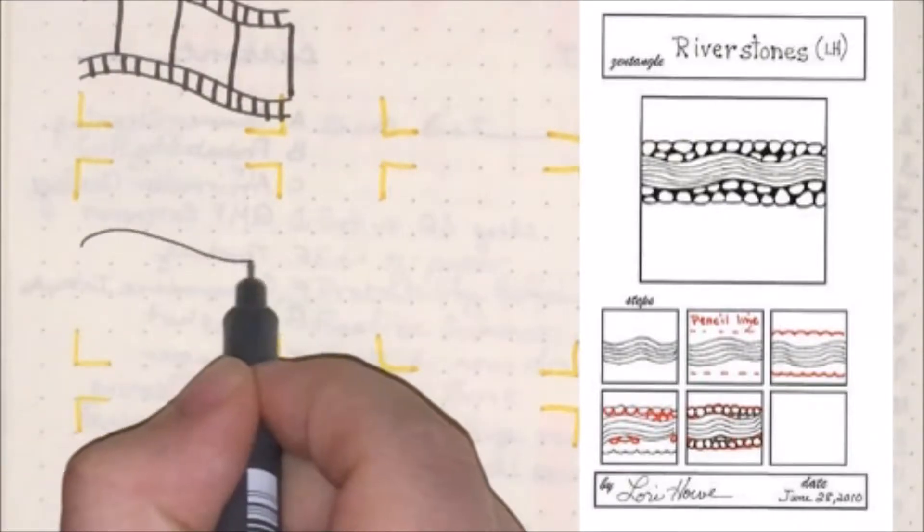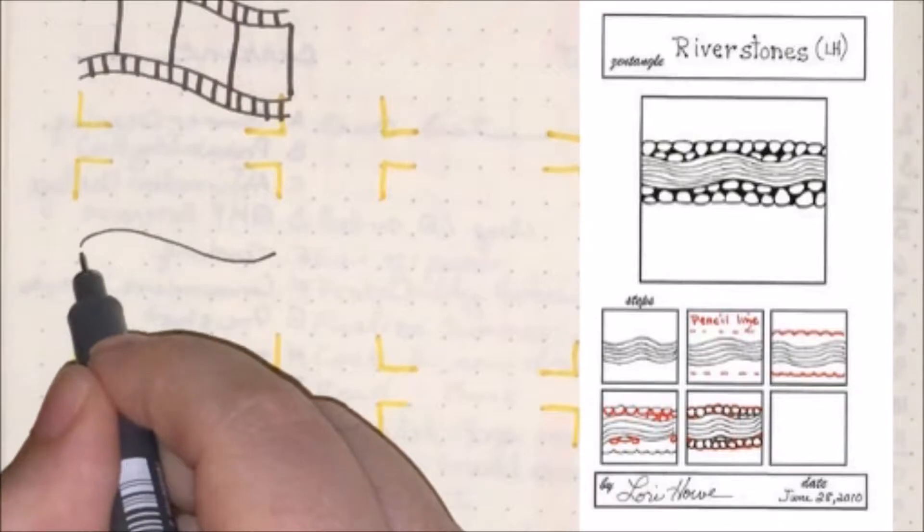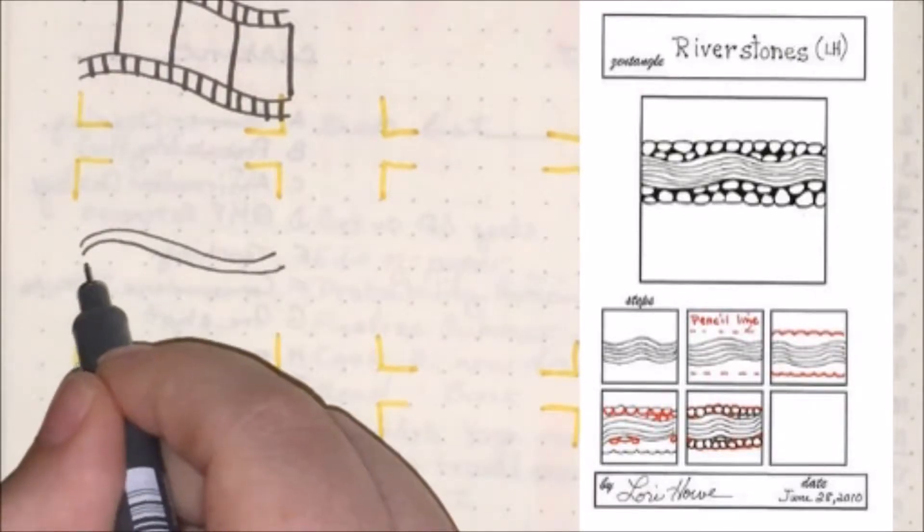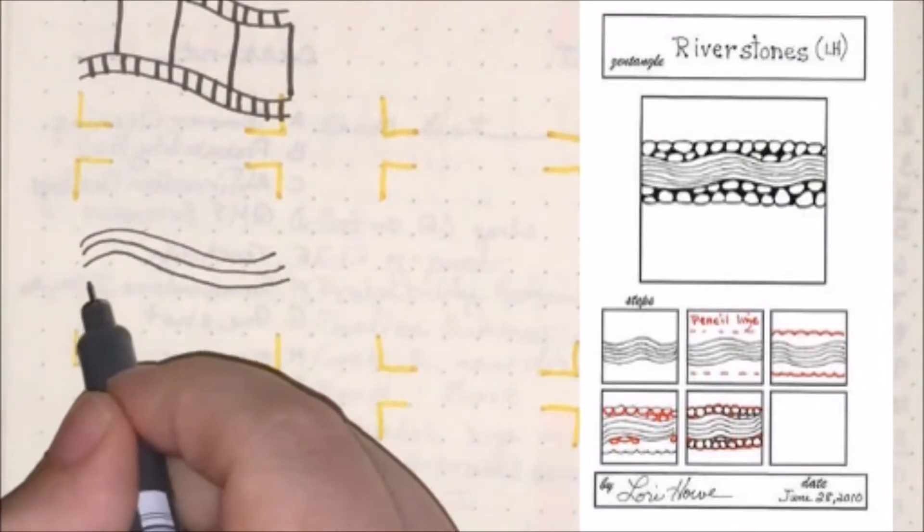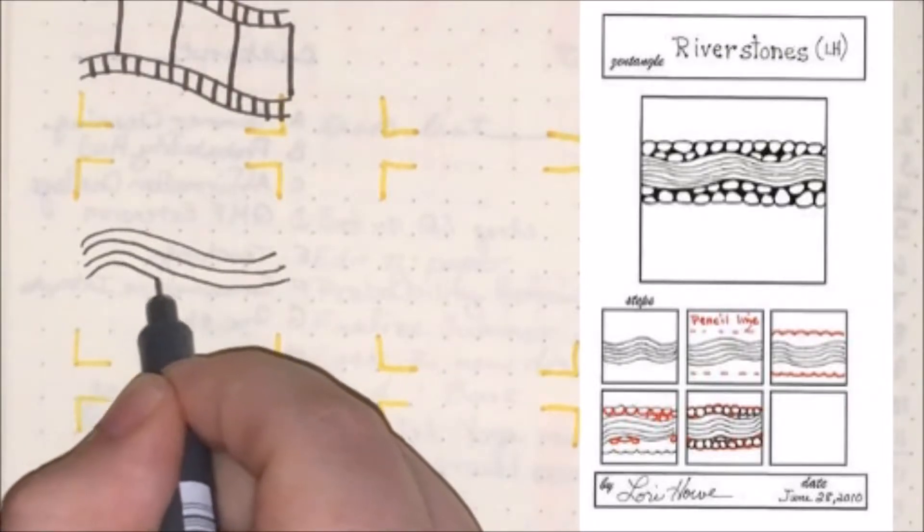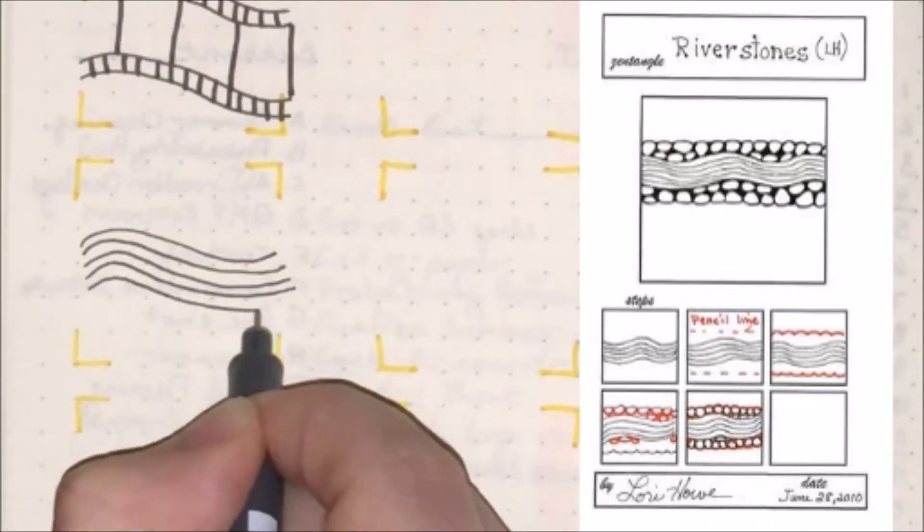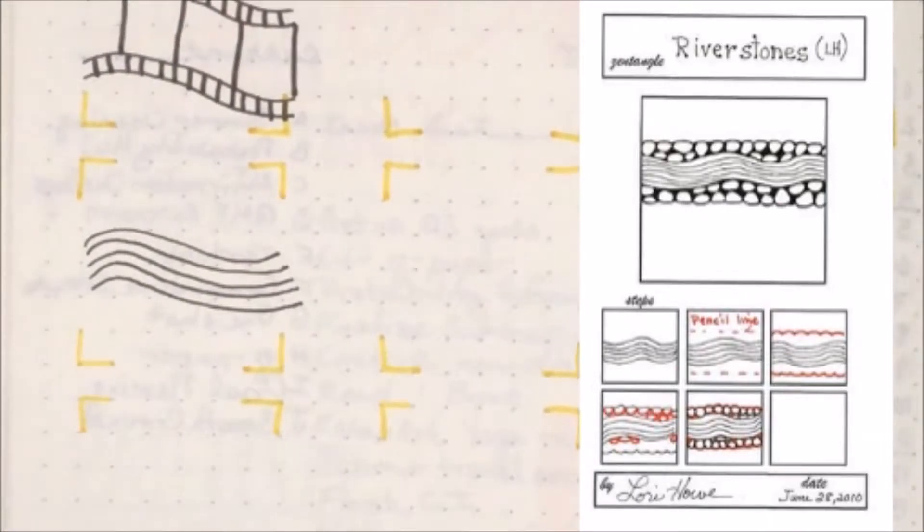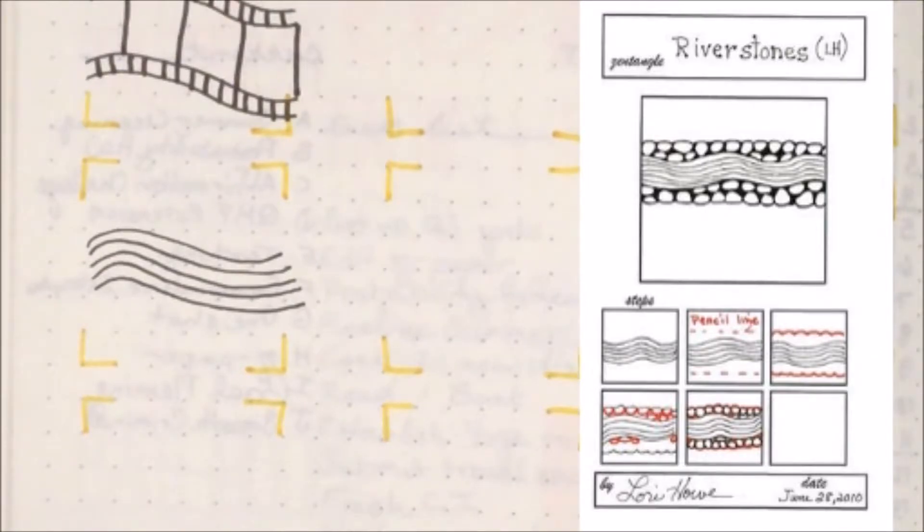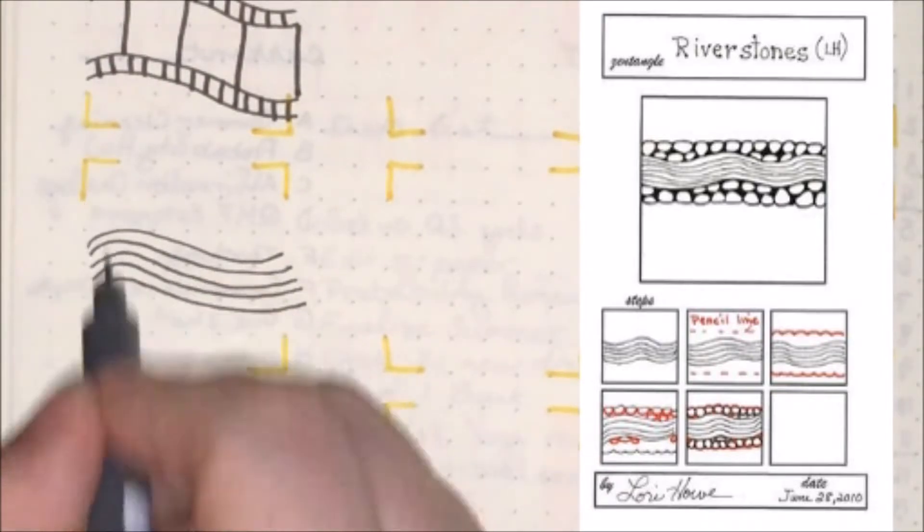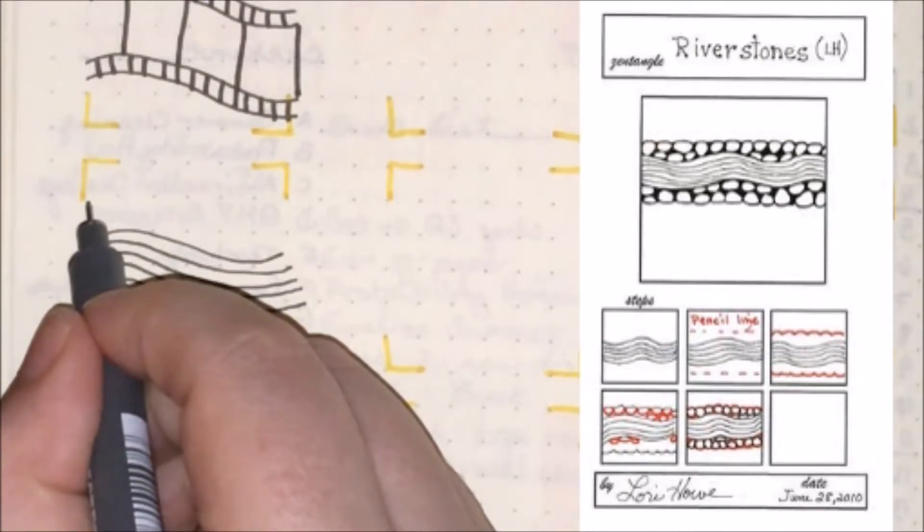we come in and we draw a little curve, and we draw another one really close to it, and another one. Let's do about five in total.